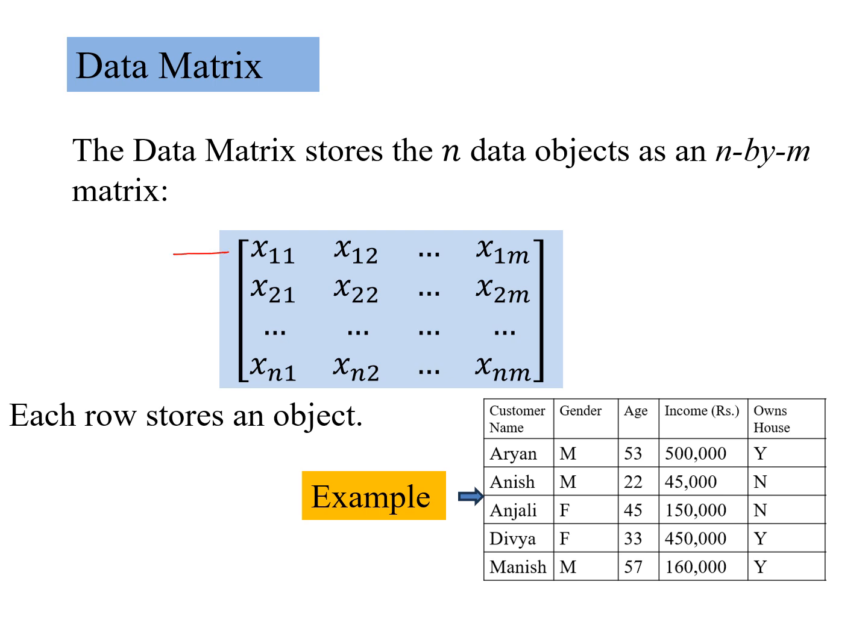If we look at rows, each row stores an object, one data point x11, x12, up to x1m. We can see that there would be m columns and n rows. This is an n by m matrix.